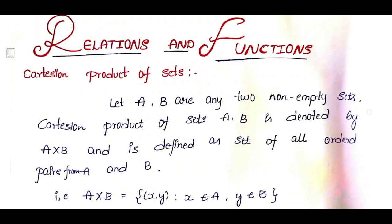Hi friends, I am Balaji Rao. Welcome to BRMAX class. This is the first class on the Relations and Functions chapter of class 11. The first definition in this chapter is Cartesian product of sets. In this class, we will learn the definition of Cartesian product of sets, examples to understand how we calculate it, and five important note points. Please watch this video till the end to understand Cartesian product of sets.